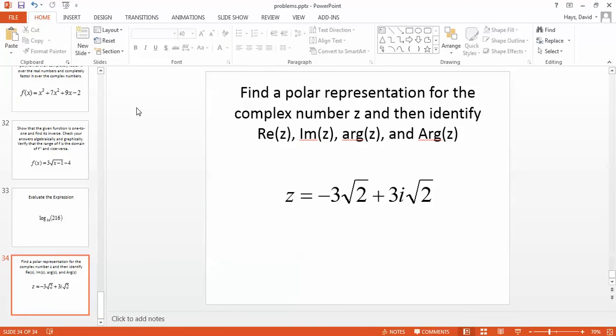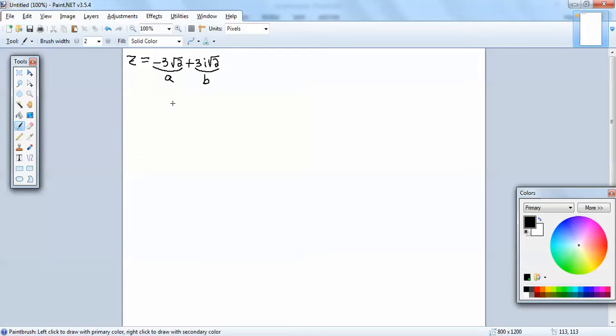So, find a polar representation. First off, let's just graph this, just get an idea of what we're dealing with. Now the a corresponds to our x-axis, so I've got negative 3 square root of 2. Then we've got 3i square root of 2. So, this would be our point we're dealing with.